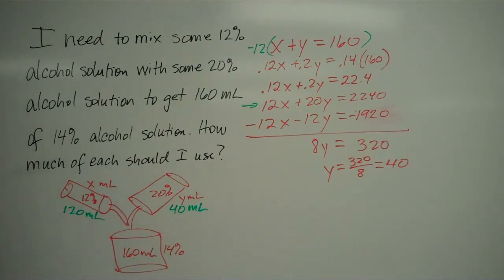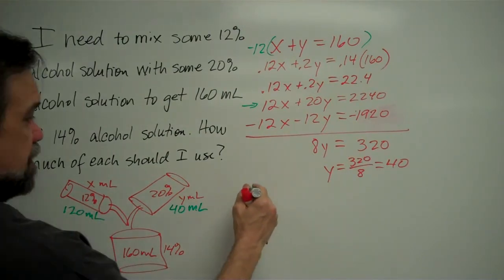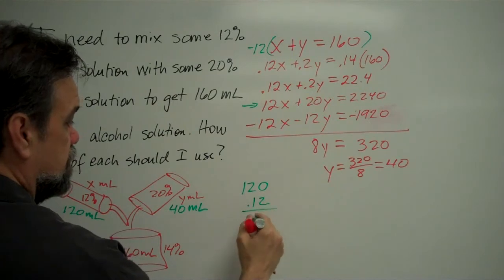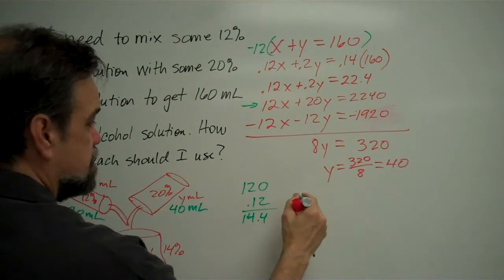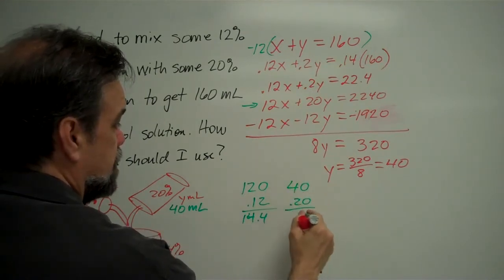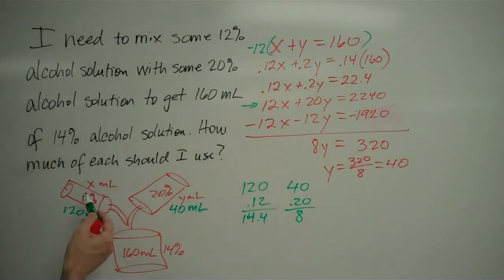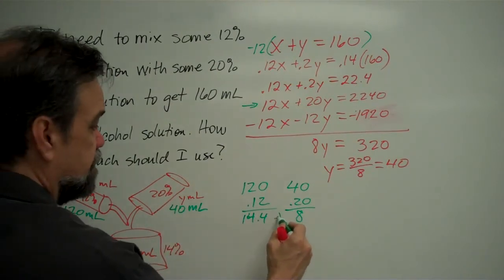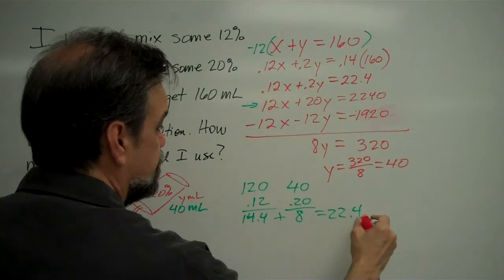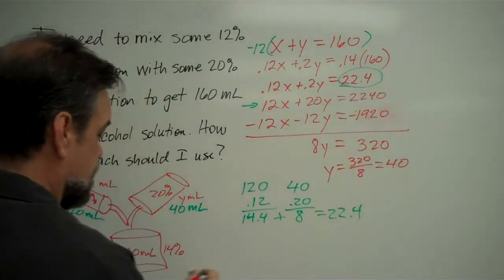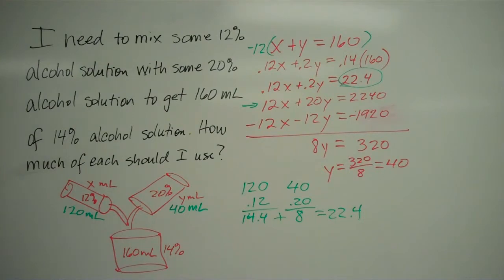And if I check my work here, 12% of 120 is 14.4, and 20% of 40 is 8. So that's the amount of alcohol - 14.4 milliliters is the amount of alcohol in this one. 8 milliliters is the amount of alcohol in this one. And if I add those together, I get 22.4, which is what I calculated to be the amount of alcohol that would be in this one. So that turns out to be right. 120 milliliters of the 12% solution, 40 milliliters of the 20% solution.